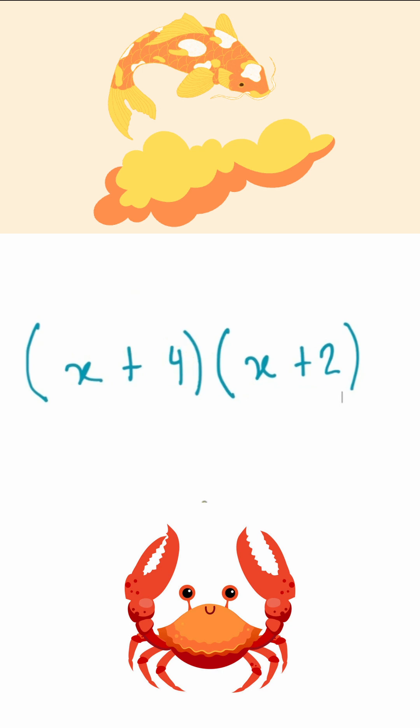So if we were to put arrows and show how to multiply, let's do this together. We would have x multiplying with the first term in the second bracket, which is x. We would then have x multiplying with 2, which is the second term in the second bracket. That would be the first half of your expansion done.